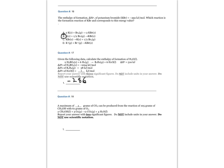Question number 18: A maximum of blank grams of CO2 can be produced from the reaction of 105 grams CH3OH with 61 grams of O2, according to the equation below. Report your answer with two significant figures. Do not include units in your answer. Do not use scientific notation.